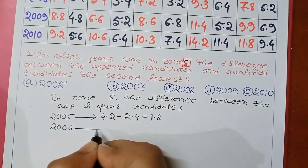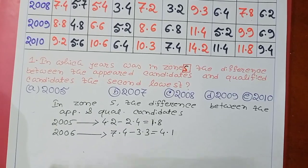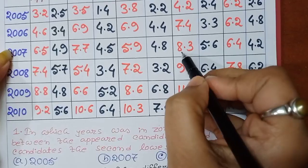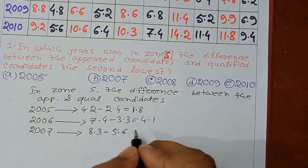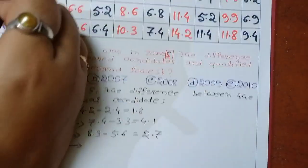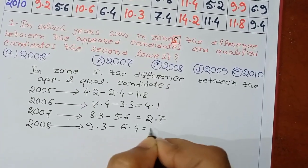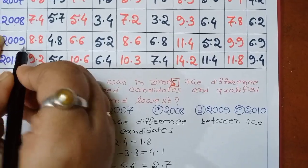In 2006 the difference is 4.1. In 2007, zone S: 9.3 minus 6.4 equals 2.9. In 2008, zone S: 9.3 minus 6.4 gives 2.9.